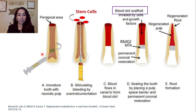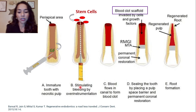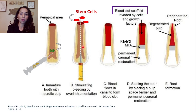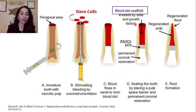I made some edits to this diagram from the paper. You use EDTA to release growth factors, stimulate bleeding by over-instrumenting about two millimeters to liberate stem cells into the pulpal canal space. Blood flows into the canal to form the blood clot, and ideally you want the blood to pool to the level of the CEJ. The blood clot scaffold is then invaded by cells and growth factors, and you place RMGI or MTA followed by a permanent coronal restoration.